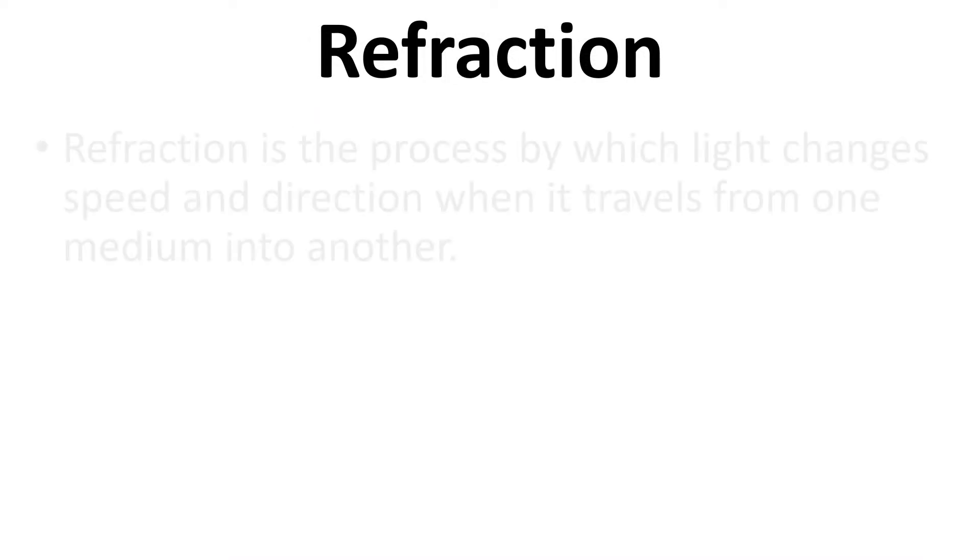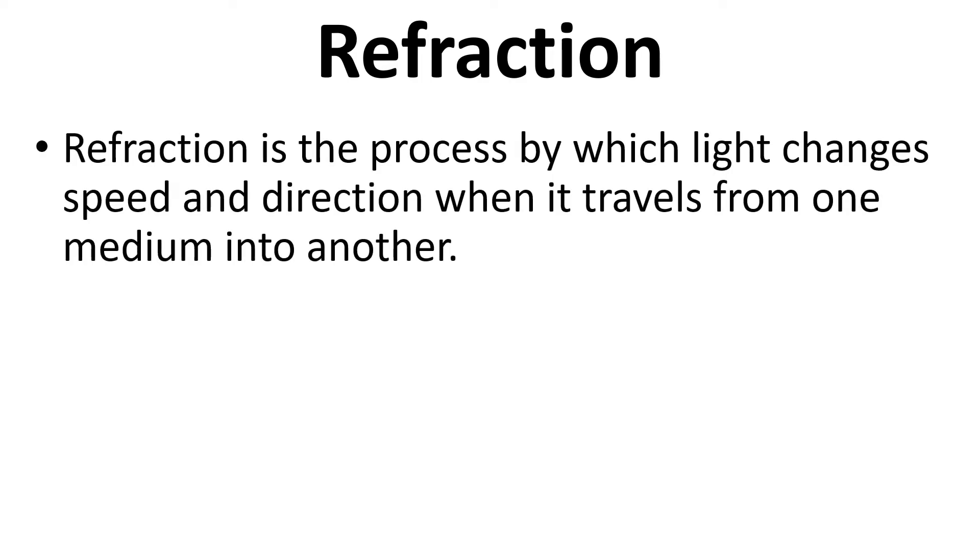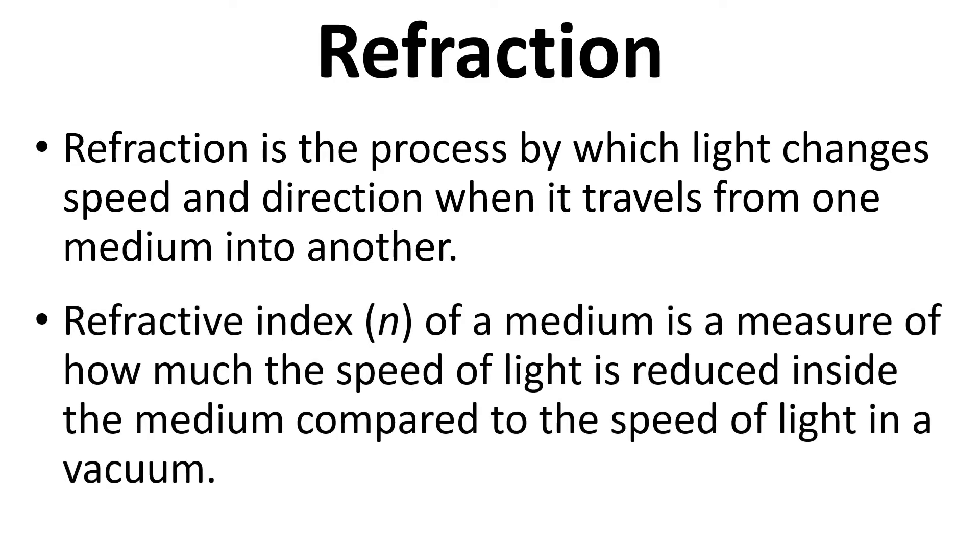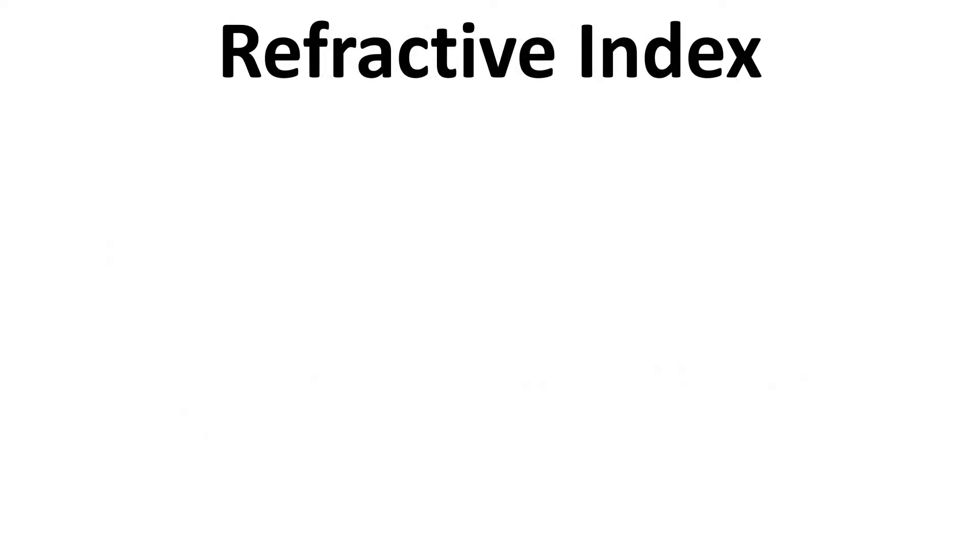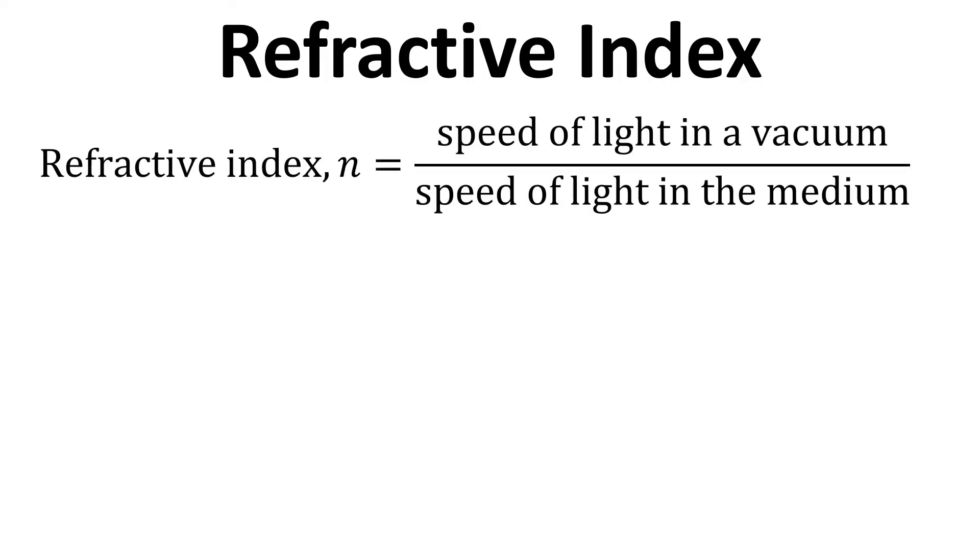Refraction is the process by which light changes speed and direction when it travels from one medium into another. The refractive index itself of a medium is a measure of how much the speed of light is reduced inside the medium compared to the speed of light in a vacuum. The equation that we have is that refractive index equals speed of light in a vacuum divided by speed of light in the medium.